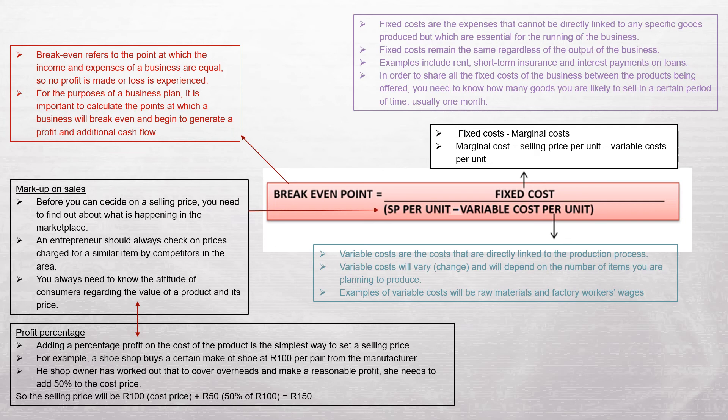Markup on sales: before deciding on a selling price, you need to find out what is happening in the marketplace. An entrepreneur should always check on prices charged for similar items by competitors in the area — there is no point in overcharging, as customers will rather support your competitor. You always need to know the attitude of consumers regarding the value of a product and its price.